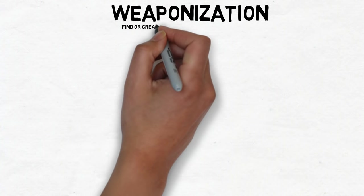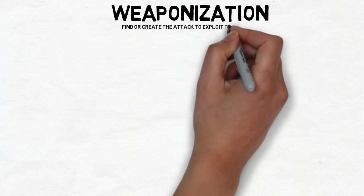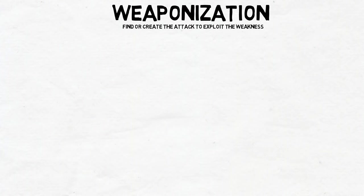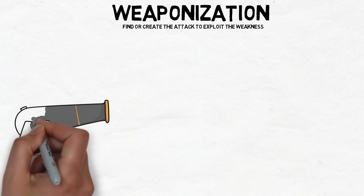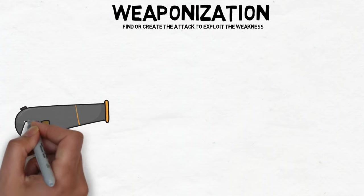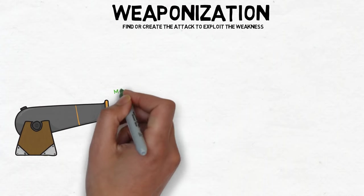Weaponization. Once an attacker has found a weakness, their next step is to find or create an attack that will exploit that vulnerability. The weapon of choice will depend on the information they collected from you during the reconnaissance step.